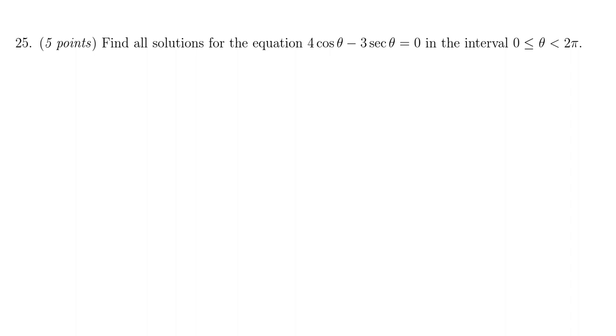I notice that secant, of course, is just 1 over cosine. So you're going to get 4 cosine theta minus 3 over cosine theta is equal to 0.